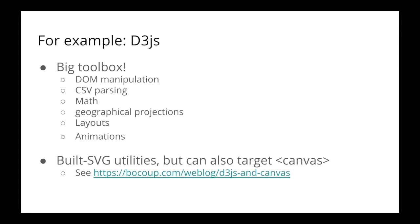D3 has a whole bunch of tools dedicated to downloading and parsing CSVs, TSVs, JSON files, and GeoJSON files that represent maps and subdivisions of space like I have in my map of Montreal. Geographical projections are very important when you're representing a globe — you can't represent a 3D thing on a 2D surface, you need to project it somehow. You can do graph layout and animations. And D3 has a lot of built-in support for interacting with the SVG graphics API, though you can also target the Canvas API with D3.